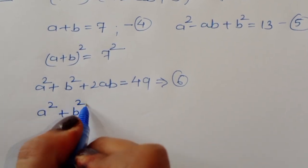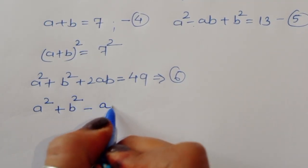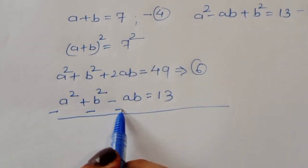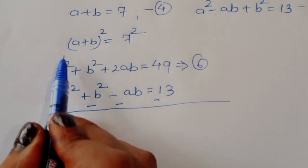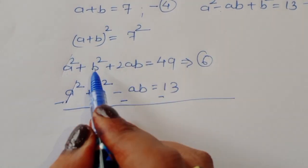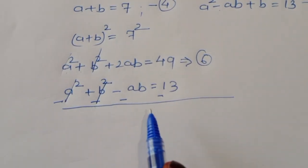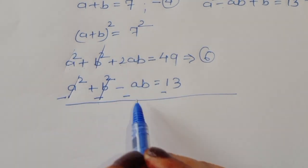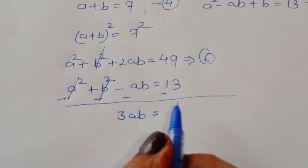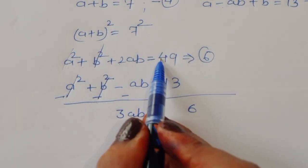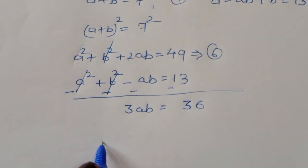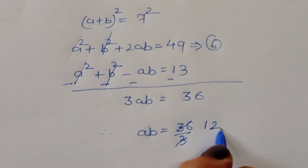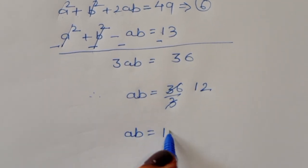Subtracting equation 6 from equation 5: (a² − ab + b²) − (a² + 2ab + b²) = 13 − 49. The a² and b² terms cancel. We get −ab − 2ab = −36, so −3ab = −36, giving 3ab = 36. Therefore ab = 36/3 = 12. This is a positive value, so we accept this case.